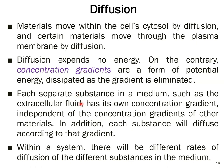Each separate substance in a medium such as the extracellular fluid has its own concentration gradient, independent of the concentration gradients of other materials. So there are sugar molecules, solute particles, water, sodium, potassium ions — everything has its own concentration gradient. Each substance will diffuse according to its own gradient at its own speed, having no effect on the other substances and their concentration gradients.